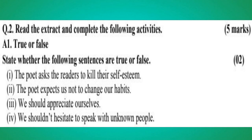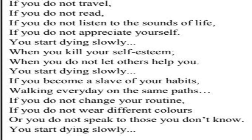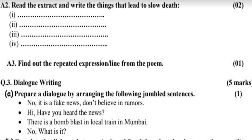Question number 2: read the extract and complete the following activities, for 5 marks. A1: True or false — state whether the following statements are true or false. 1. The poet asks the readers to kill their self-esteem. 2. The poet expects us not to change our habits. 3. We should appreciate ourselves. 4. We shouldn't hesitate to speak with unknown people. A2: Read the extract and write the things that lead to slow death. A3: Find out the repeated expressions or lines from the poem.